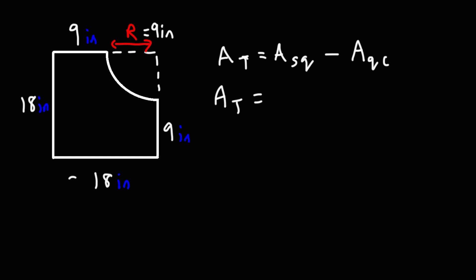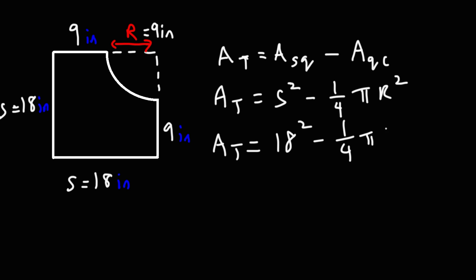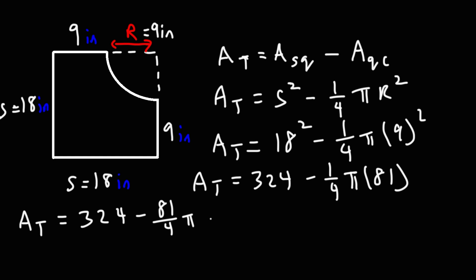The area of the square, if we call the side S, is simply S squared — or length times width gives the same result. The area of the quarter circle is one-fourth pi r squared. So this is going to be S squared, which is 18 squared, minus one-fourth pi, with the radius of the quarter circle being 9. Now 18 times 18 is 324, and 9 squared is 81. So the exact answer is 324 minus 81/4 pi square inches.